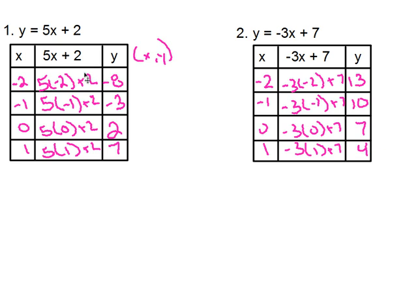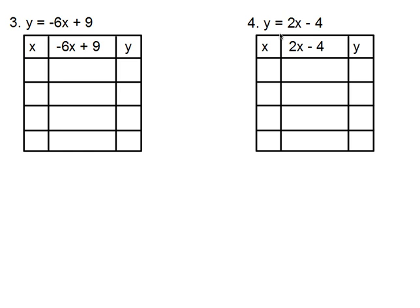All you do is pick whatever you want for your x, show your substitution, and whatever the answer is becomes your y column. Go ahead and try the next two. I like to choose negative two, negative one, zero, and one — but you can choose whatever you want. Pause and come back when you're ready.